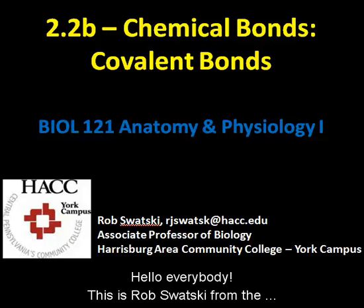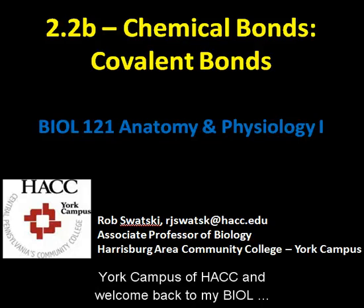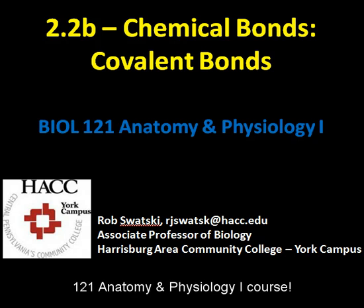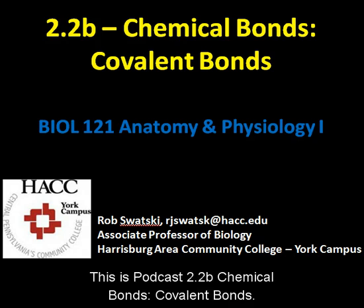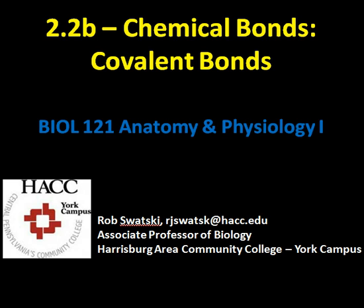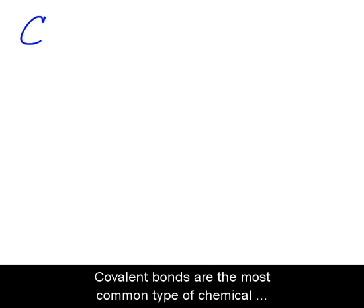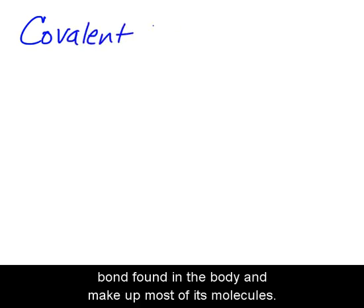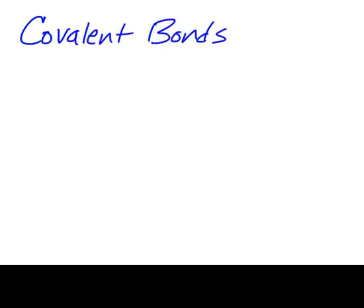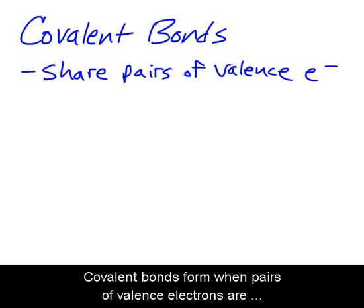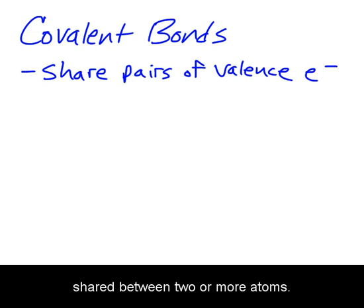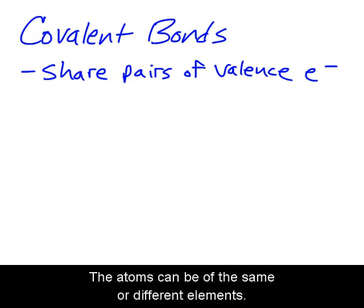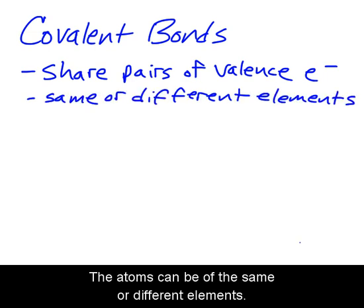Hello everybody, this is Rob Swatsky from HACC, and welcome back to my Biology 121 Anatomy and Physiology 1 course. This is podcast 2.2B: Chemical Bonds — Covalent Bonds. Covalent bonds are the most common type of chemical bond found in the body and make up most of its molecules. Covalent bonds form when pairs of valence electrons are shared between two or more atoms, which can be of the same or different elements.